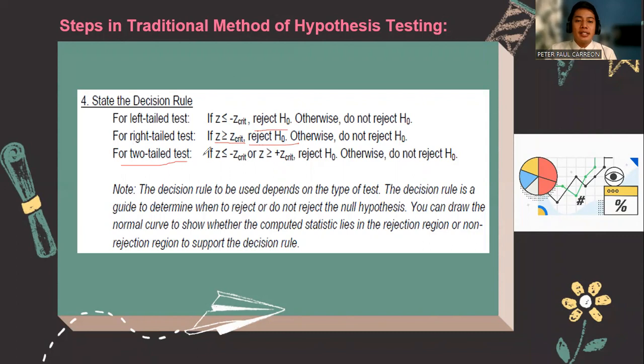For a two-tailed test, when the computed z is less than or equal to the negative-critical or the positive-critical, therefore we fail to reject the null hypothesis. So the decision rule will depend on the type of test that you have.